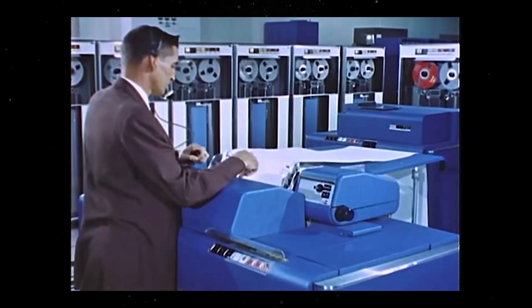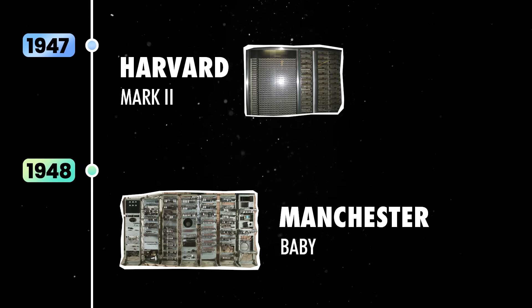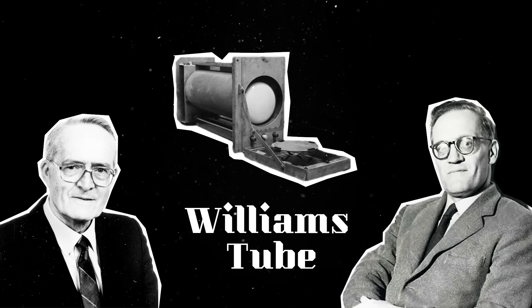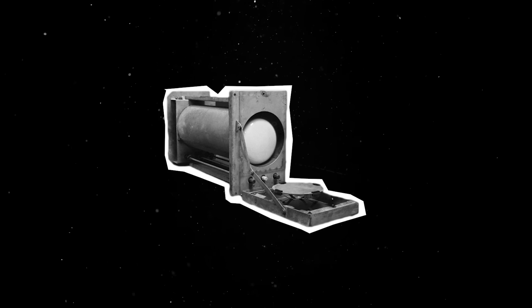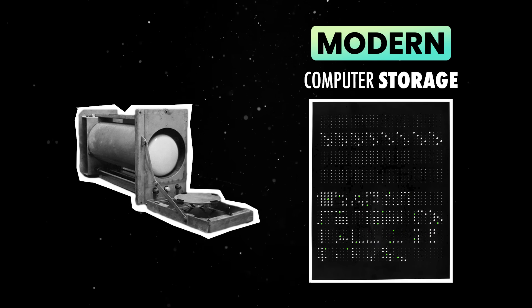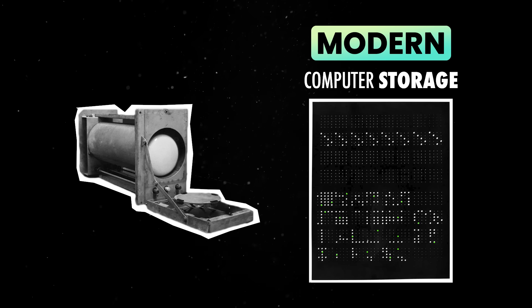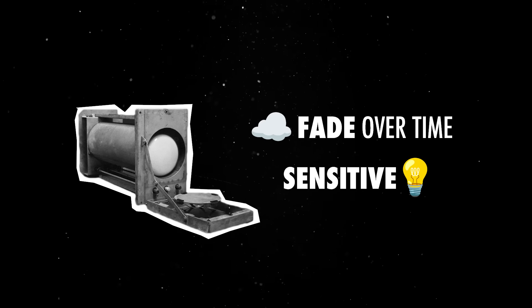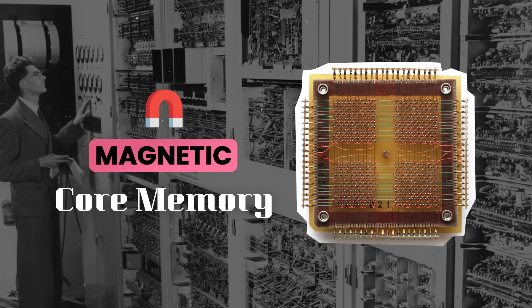On a more serious note, as computers tackled increasingly complex problems, the need for specialized features grew. One notable breakthrough was the Williams Tube, first introduced in the Manchester Baby computer in 1948. Developed by Freddie Williams and Tom Kilburn, it was the first random-access digital storage device. Unlike earlier computers that relied on punched cards, mechanical switches, or delay lines, the Williams Tube used a cathode ray tube to store binary data as electrostatic charges. This innovation marked the beginning of modern computer storage, as information could now be stored and retrieved at electronic speeds. While groundbreaking, data stored on it could fade over time and the technology was sensitive to interference, pushing researchers to develop more stable solutions, leading to the invention of magnetic core memory in the early 1950s.